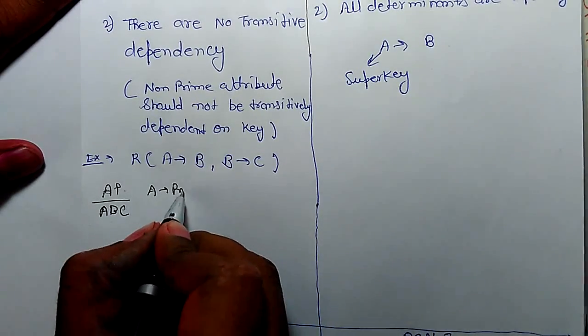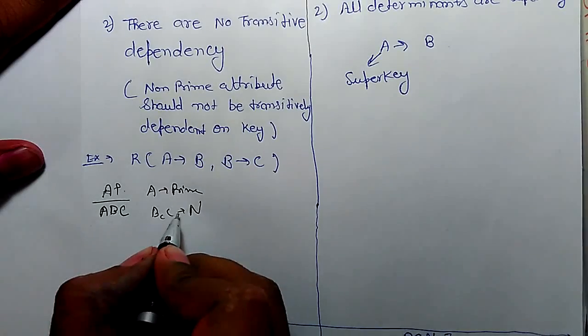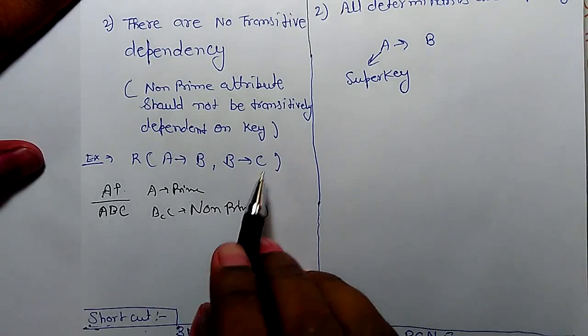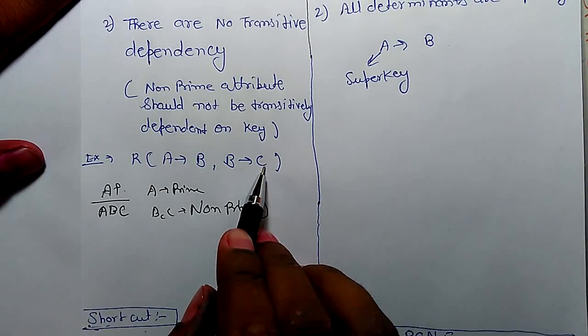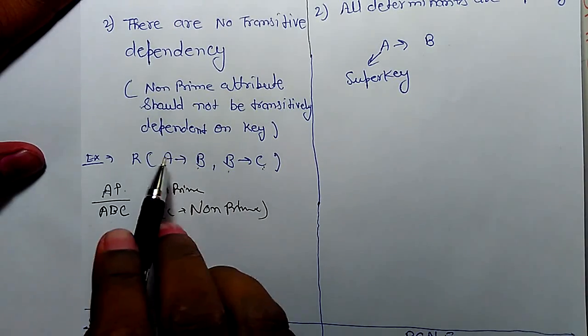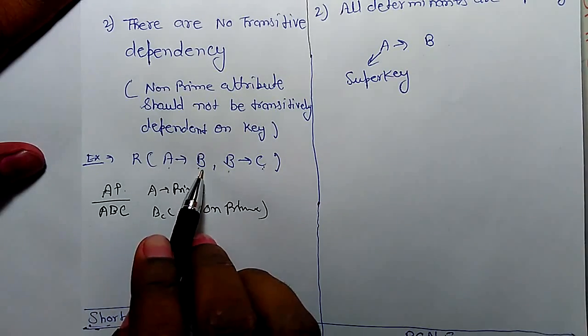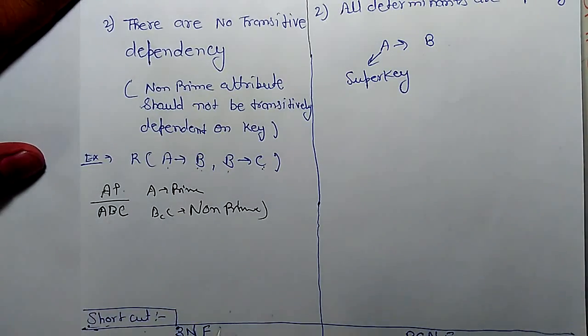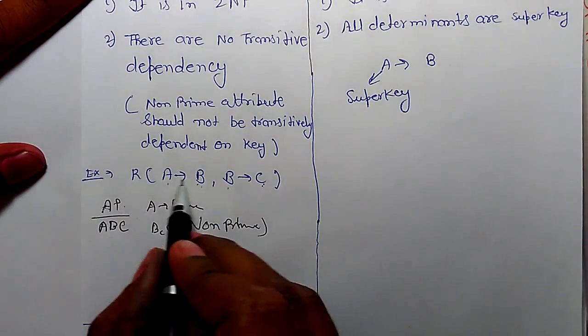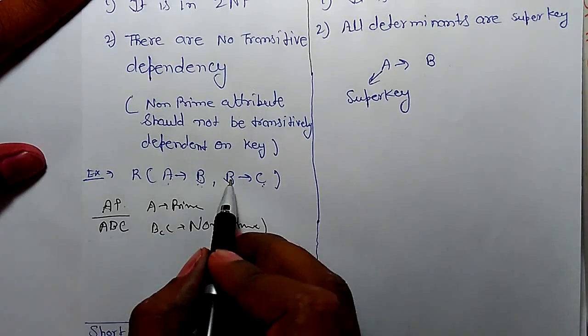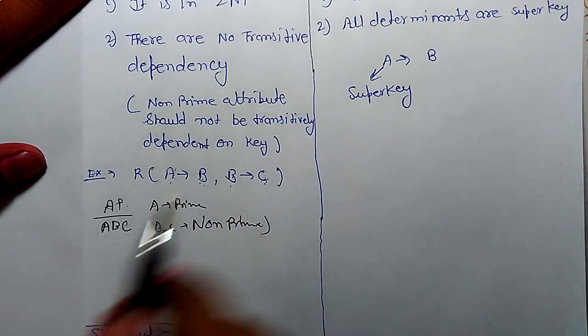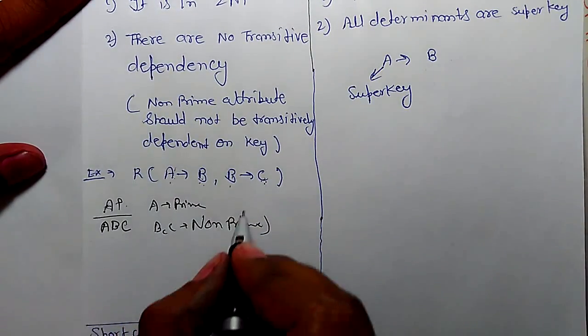A is a prime attribute and B, C are non-prime. C is a non-prime, B is also non-prime. And B is a non-prime, A is a key. So non-prime attribute is fully functionally dependent on key, so it is in 2NF. A determines B, B determines C. It means A can determine C. Here transitive dependency is there. That's why it is not in 3NF.